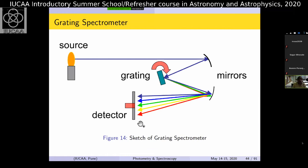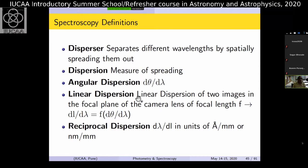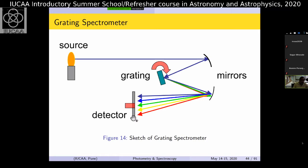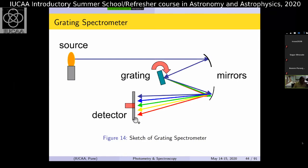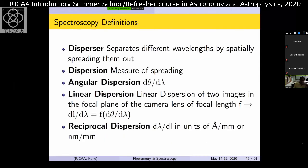Now let's quickly look at the basic grating spectrometer. This is just a schematic — the grating moves and the spectrum moves across the detector. Either you move the grating and fix the detector, or keep the grating fixed and take the full CCD image, then analyze that digitally. Now more mathematical definitions: a disperser spatially separates wavelengths. Dispersion is the measure of spreading — angular dispersion is dθ/dλ. Linear dispersion involves the camera focal length: small length bins dL correspond to wavelength bins dλ. The practical unit is nanometers per millimeter — each millimeter on the CCD corresponds to a certain Δλ bin.